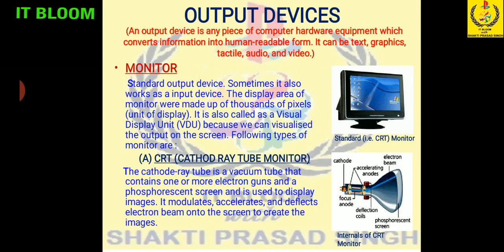The first one is the monitor. It is a standard output device and sometimes it also works as an input device. The display area of a monitor is made up of thousands of pixels. A pixel is a unit of display — similar to the small boxes on a graph paper, that single unit of a display is called a pixel. Monitor is also called a visual display unit because we are getting the output in visual form.